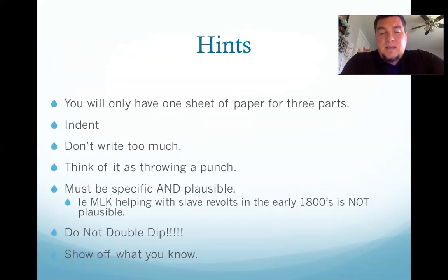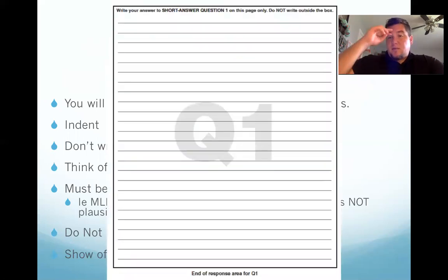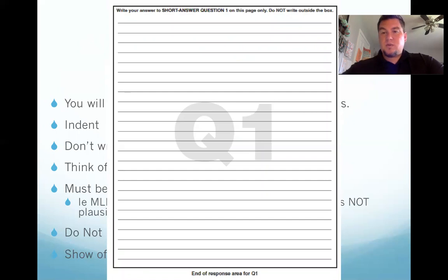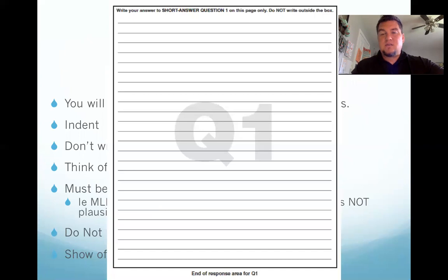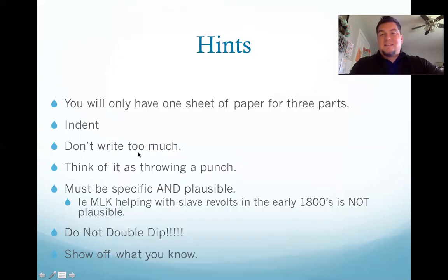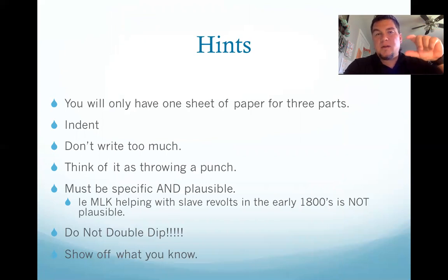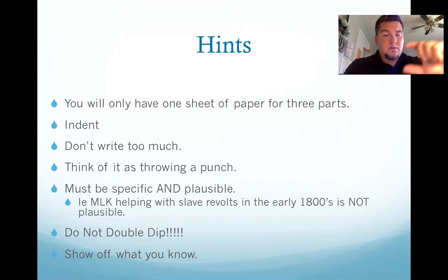Some hints: you're only going to have one sheet of paper for three parts. The College Board paper has three different sections, and if you follow my structure, that's nine sentences on that sheet of paper — another nine sentences for Q2. So you're not writing a full essay. Students who don't practice this will write an essay on part A and then not get to B or C, so they just won't get the points. Also, indent so it's clear which part you're starting — this is not a requirement, but you want to make it as easy as possible for the person grading.